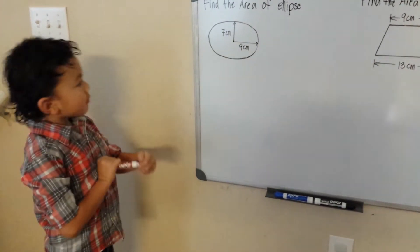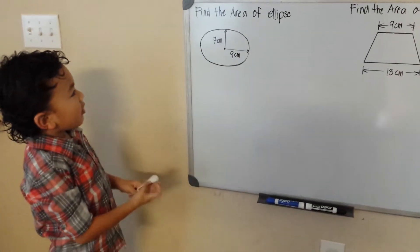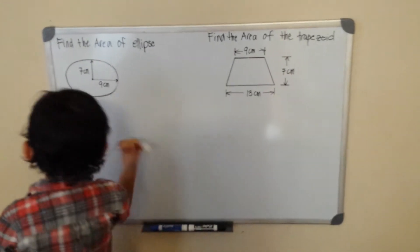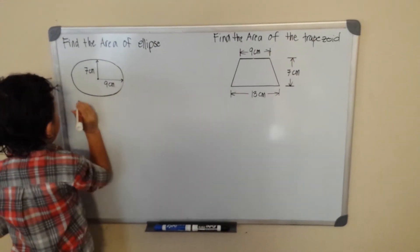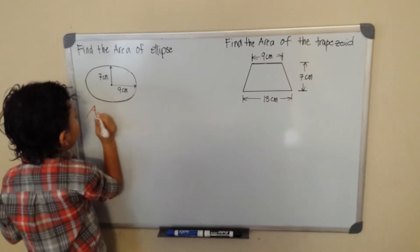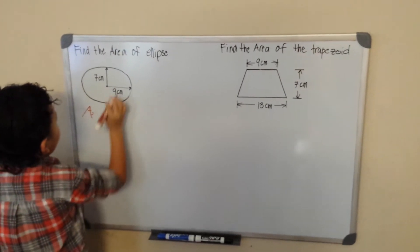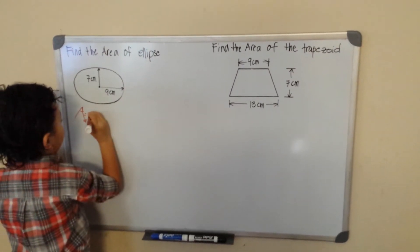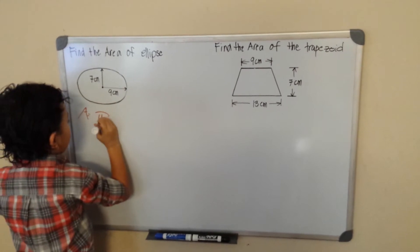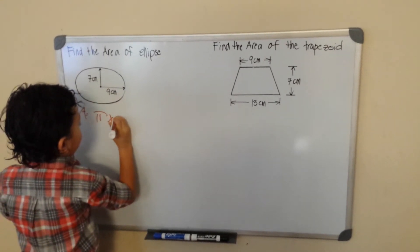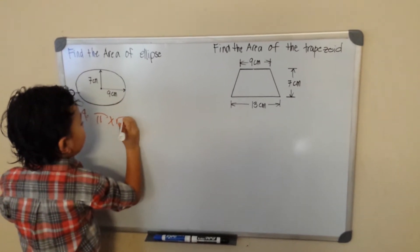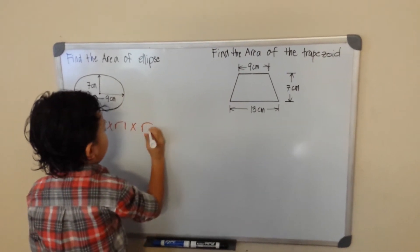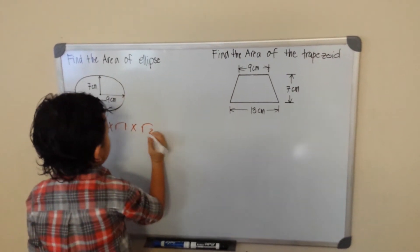Hello, my name is Rita and today I'm going to do the area of the ellipse and the area of the trapezoid. My formula for the ellipse is pi times r1 times r2.